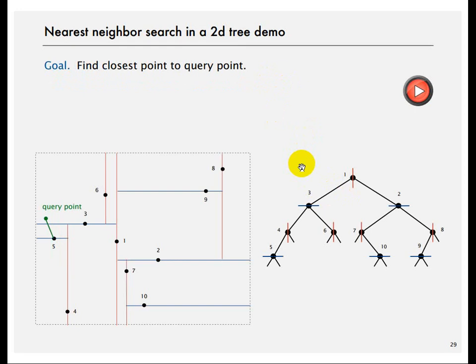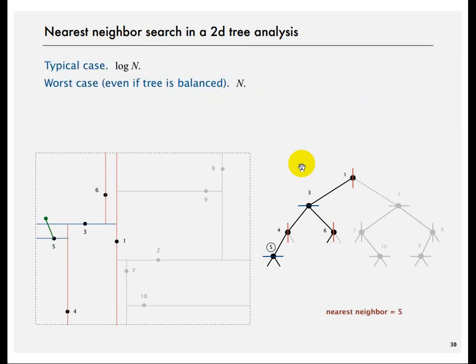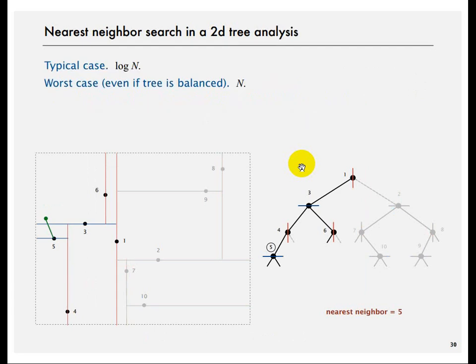Nearest neighbor search is another example where a similar approach applies — searching left and right subtrees — but in the worst case you may have to look at all nodes. That's pretty much it for the binary search trees section.